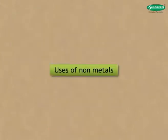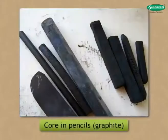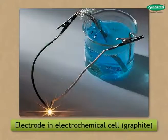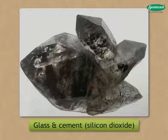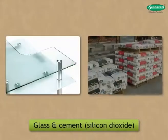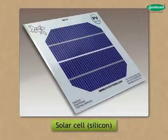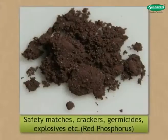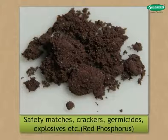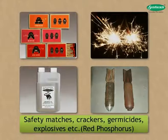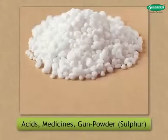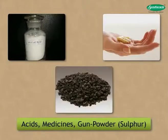Uses of non-metals: graphite is used as the core in pencils and as one electrode in an electrochemical cell. Silicon dioxide, the oxide of the metalloid silicon, is used in making glass and cement. Silicon is used in solar cells. Red phosphorus is widely used for making safety matches, crackers, germicides, explosives, etc. Sulfur is used for producing acids and also in some medicines, gunpowder, etc.